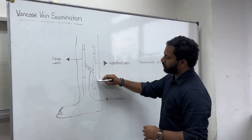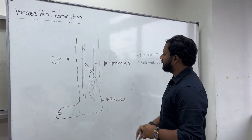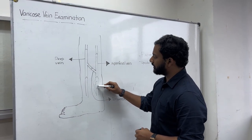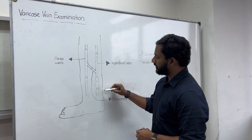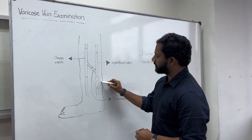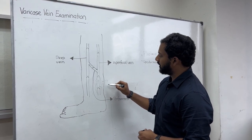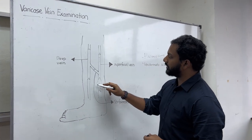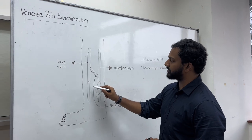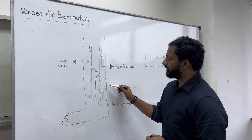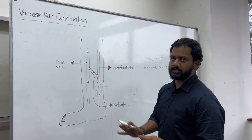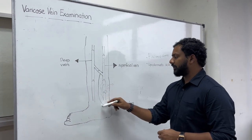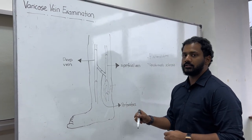With pooling of blood and pressure, some blood will leak out. The RBCs break down and one of the products is hemosiderin. Hemosiderin causes a brownish discoloration at the distal leg and shin. The pooling of blood can also trigger inflammation, causing venous eczema.